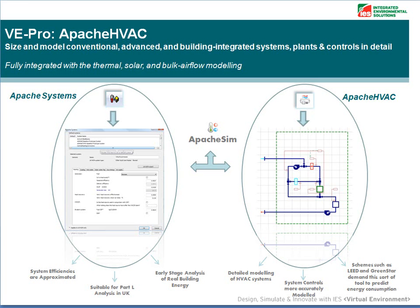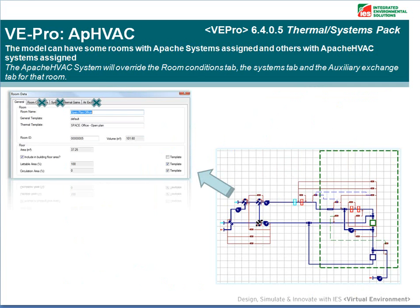The Apache HVAC module is fully integrated with the other modules in the energy category. It links into the Apache Sim module and will overwrite the Apache Systems if they are already input. So if you have an Apache HVAC system assigned to a room, the Apache HVAC system will override the room conditions tab, the systems tab and the air exchange tab for the room.